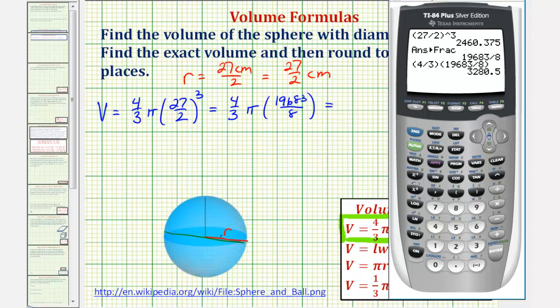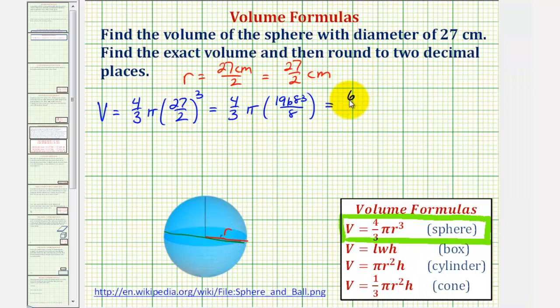Again, we don't want to have this as a decimal. It's not good form to have a decimal times pi. So we'll convert this back to a fraction by pressing math, enter, enter. And we have 6,561 divided by two, but we can't forget about the factor of pi. So we have 6,561 divided by two pi.